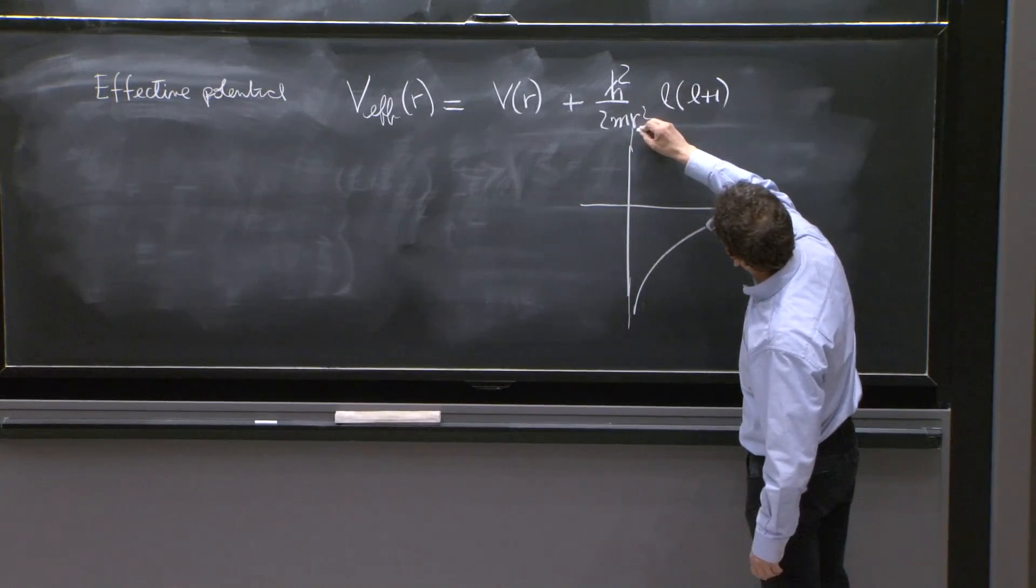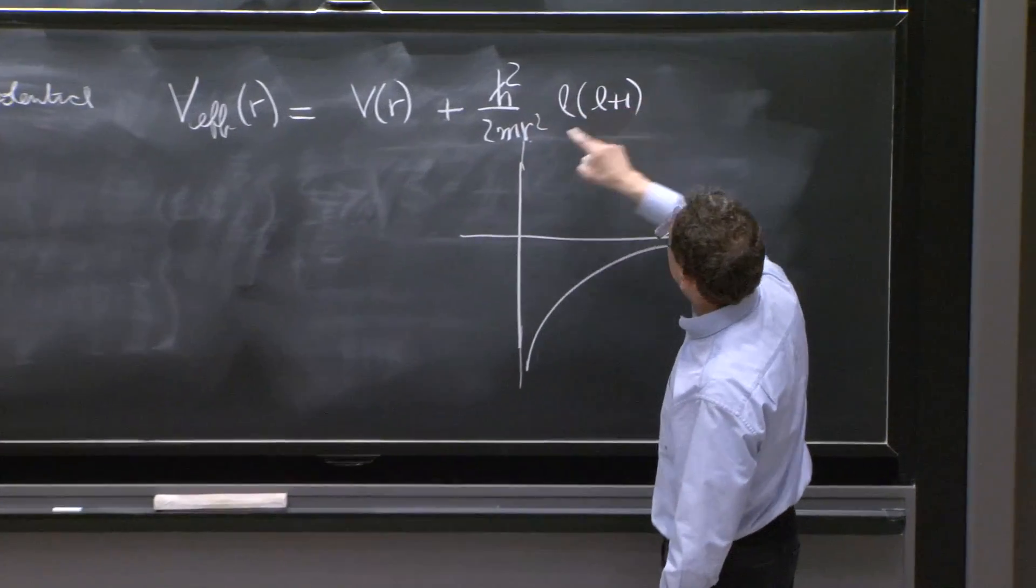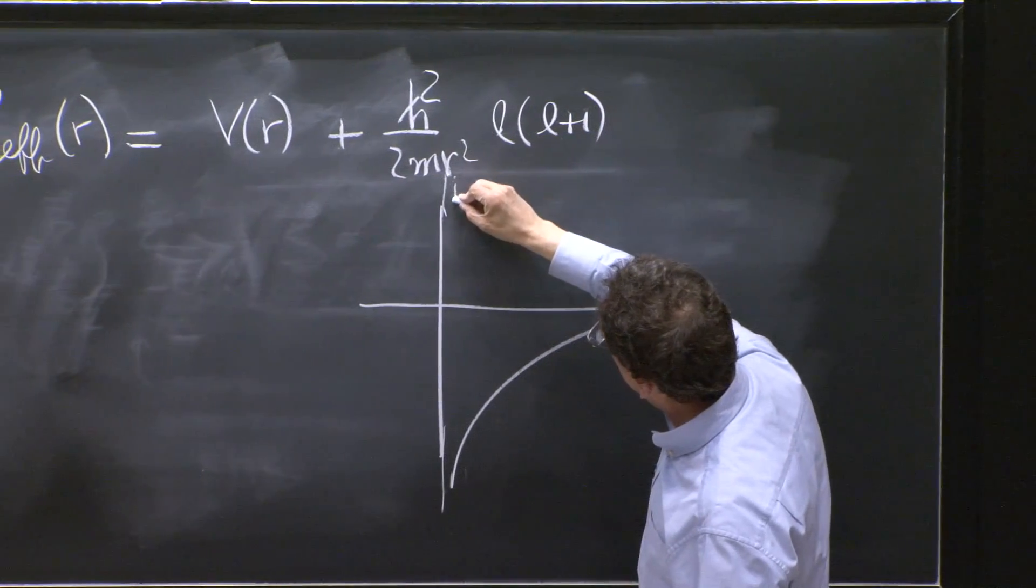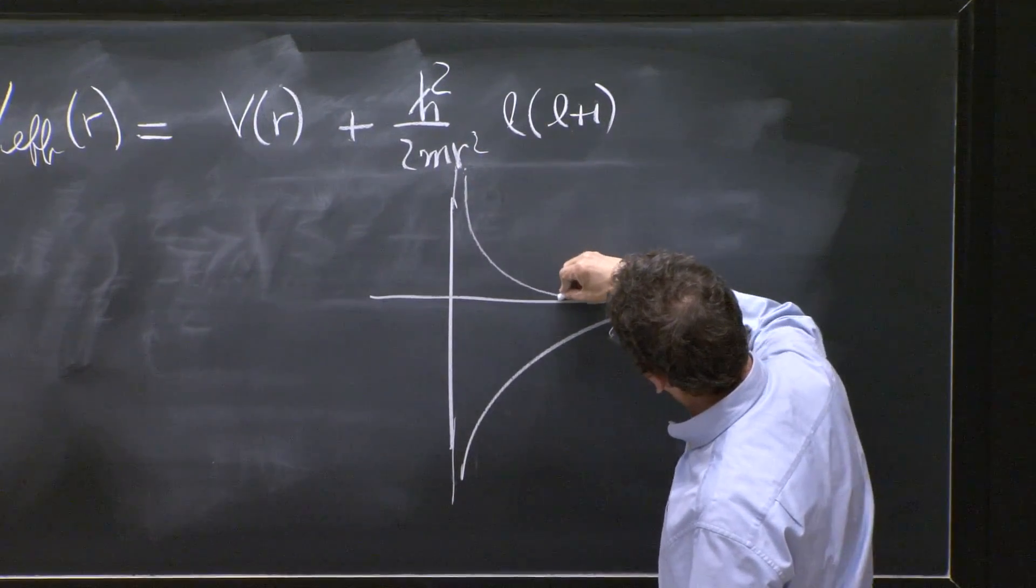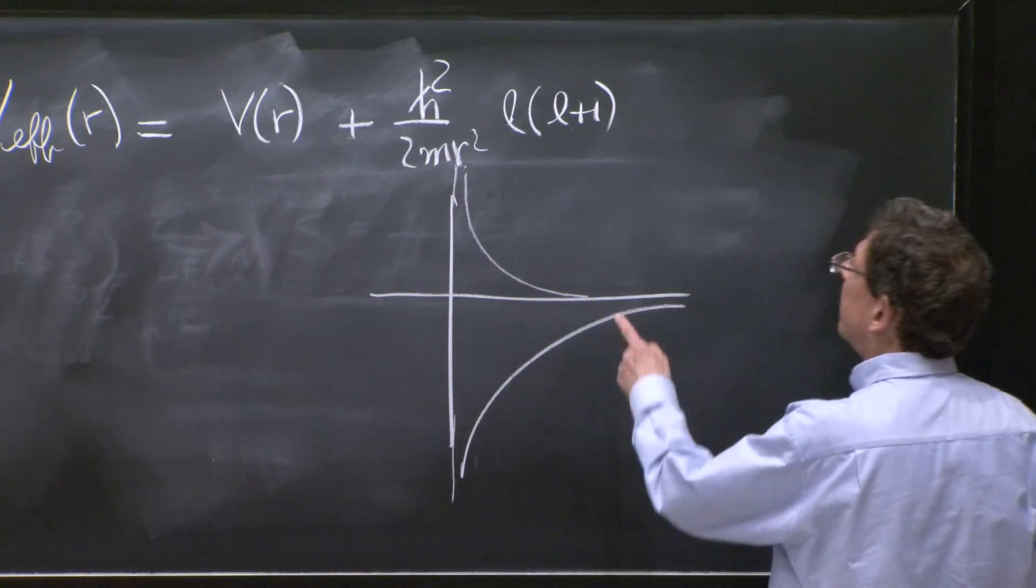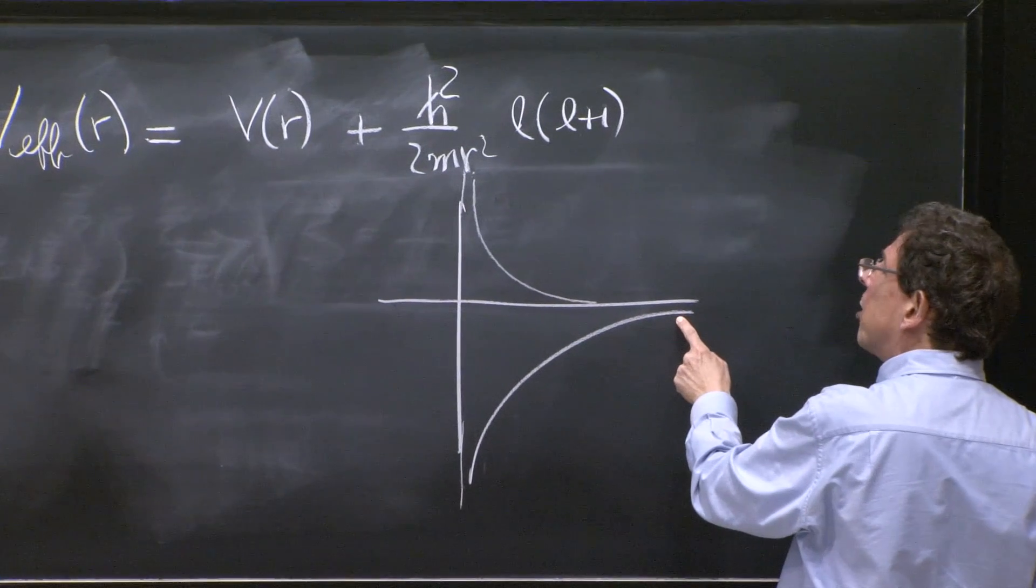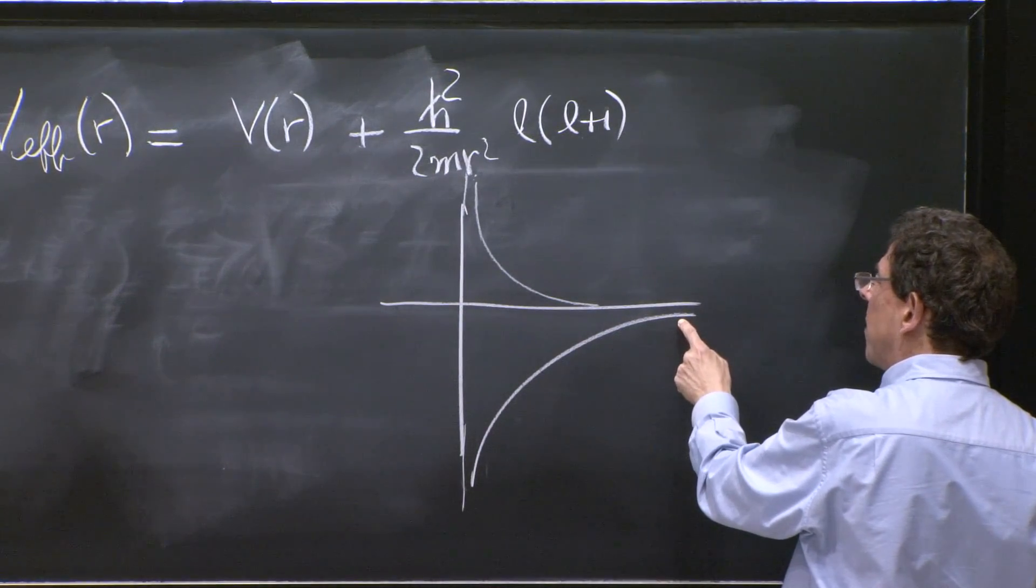you have to add here a potential that diverges. And it's positive, say for some l positive. And falls off very fast. Because it falls off like r squared, and the Coulomb potential falls off like 1 over r.